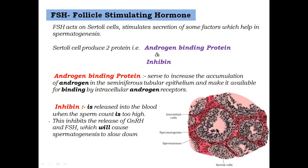Inhibin is released into the blood when the sperm count is too high. When the sperm count becomes elevated, this hormone is released as part of a feedback mechanism.